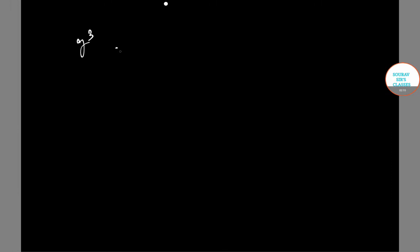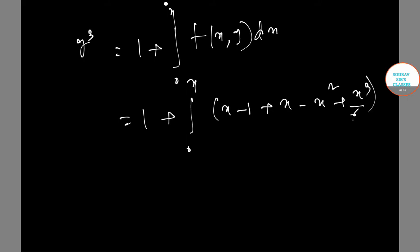We can say that y₃ = 1 + ∫f(x,y)dx from 0 to x = 1 + ∫(x - 1 + x - x² + x³/6)dx from 0 to x. This gives us 1 + x² - x - x³/3 + x⁴/24.